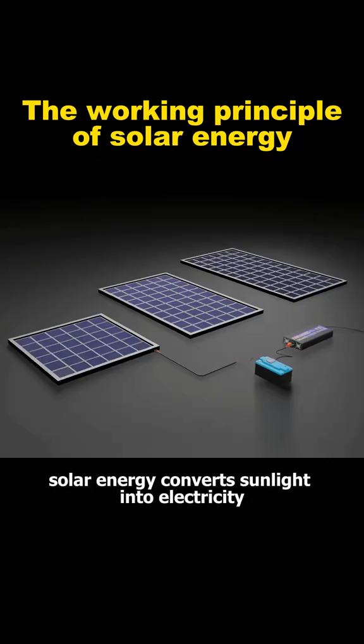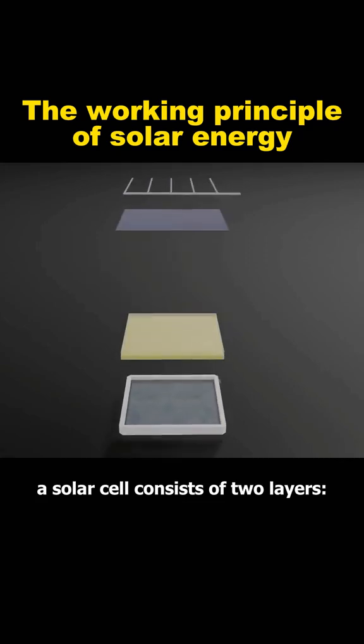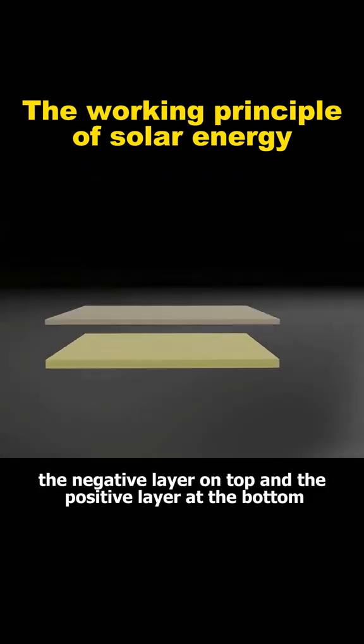I'm really curious about how solar energy converts sunlight into electricity. In fact, a solar cell consists of two layers: the negative layer on top and the positive layer at the bottom.